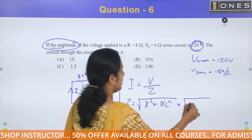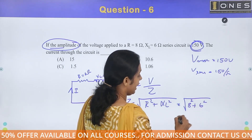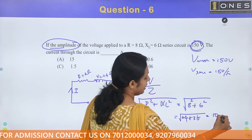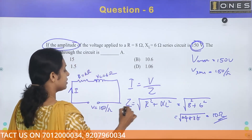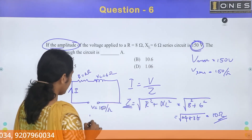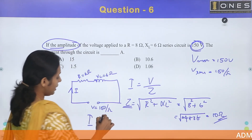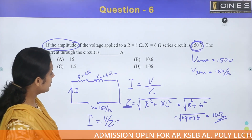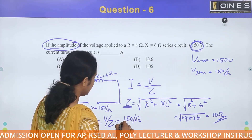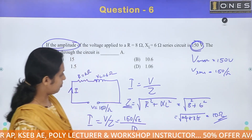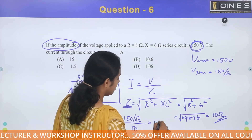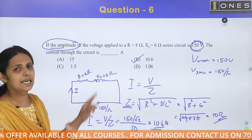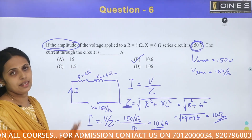The impedance is the square root of 8 squared plus 6 squared, which is the square root of 64 plus 36, which equals root 100, that is 10 ohm. The current I equals V divided by Z, so I equals 150 divided by root 2 divided by 10, which gives approximately 10.6 A. The answer is option B — this is the RMS current value.